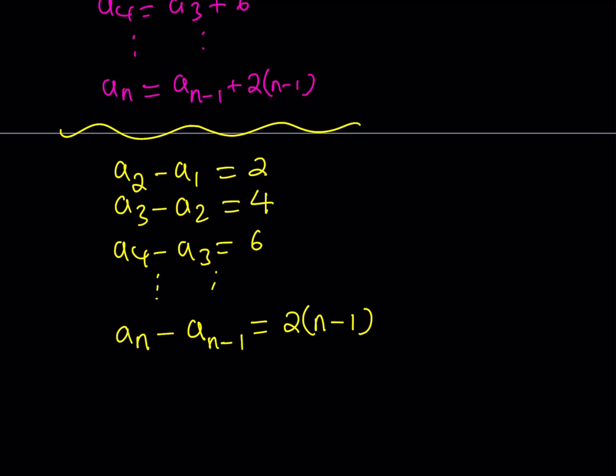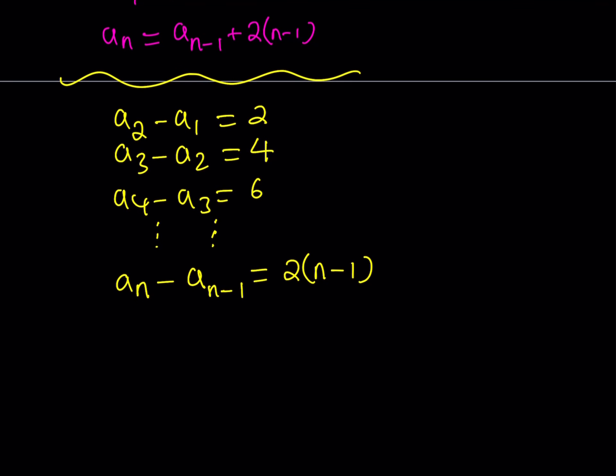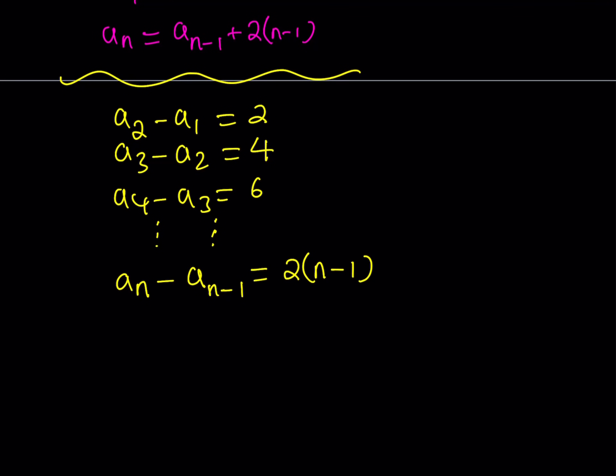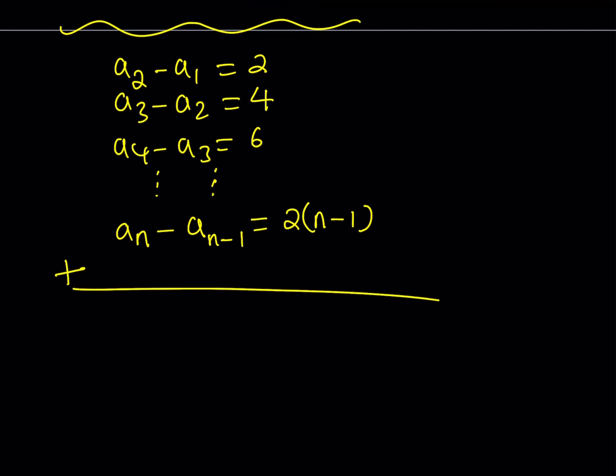So these are all the differences that we can write. Notice that on the left hand side we have the terms of the sequence. On the right hand side we have all the even numbers. Pretty much 2 through 2 times the quantity n minus 1. So the one big advantage of writing it this way is we can just go ahead and add both sides of this equation. So we can add side by side. And we're going to get something nice. Because a lot of terms are going to cancel out.